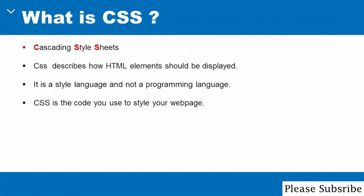A typical example would be if you wanted to style all the paragraph elements on your HTML page — if you want to turn the content or the text into red, this is how you would write the CSS. The P will indicate the actual selector, which is the HTML element you're trying to style. The color will be the property that you are trying to apply, and blue will be the value for the property. So what this rule set is saying is: I want to make all the paragraph elements blue.